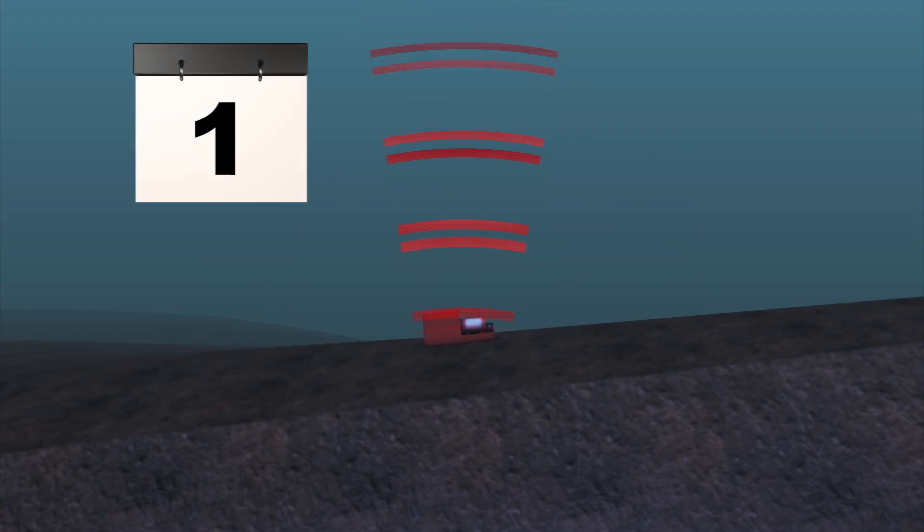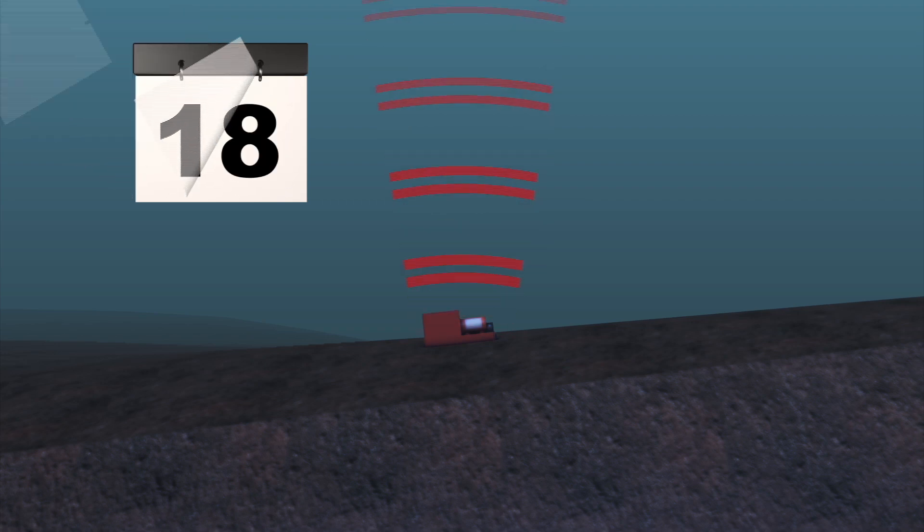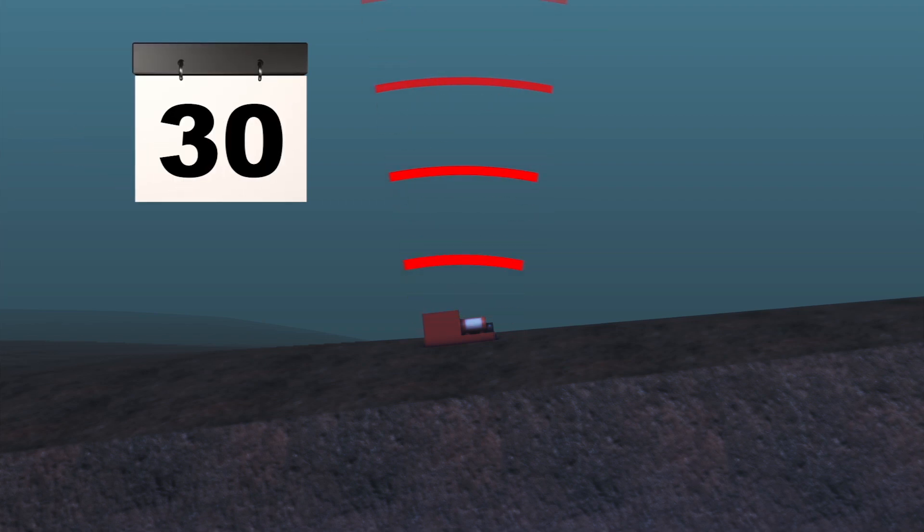However, the underwater locator beacon of a black box only transmits a pulse every second for just 30 days.